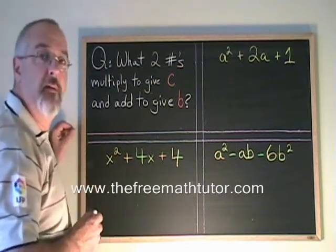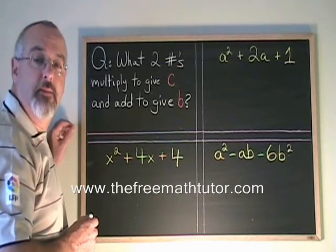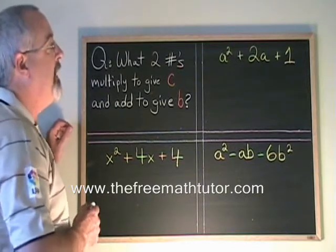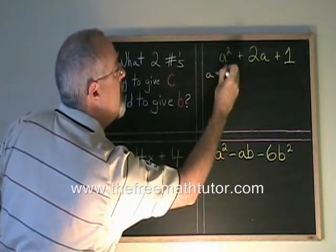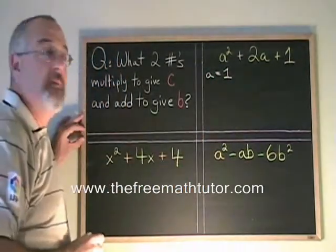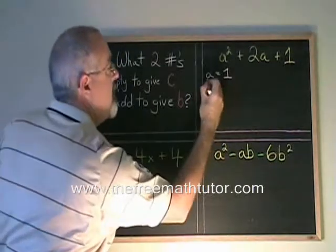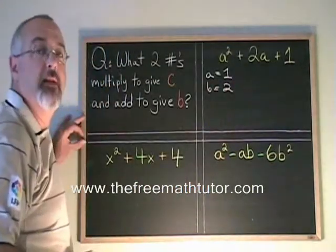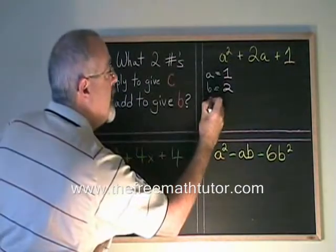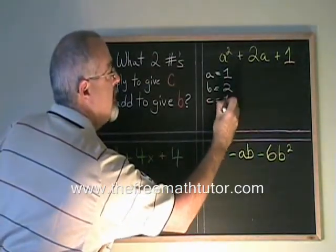If the trinomial is in the form ax squared plus bx plus c, the a is the numerical coefficient of the first term. The b is the numerical coefficient of the second term. In this case, that is a 2. And the c is the numerical coefficient of the third term. In this case, that is a 1.